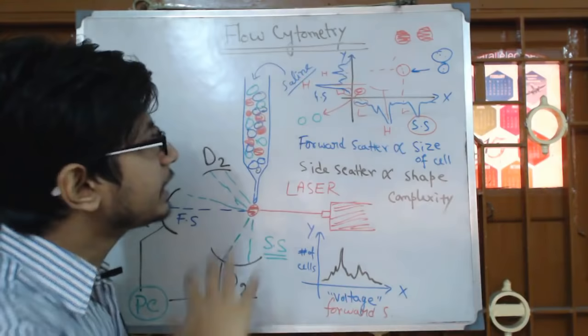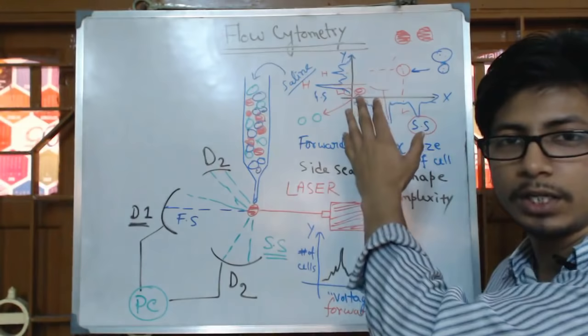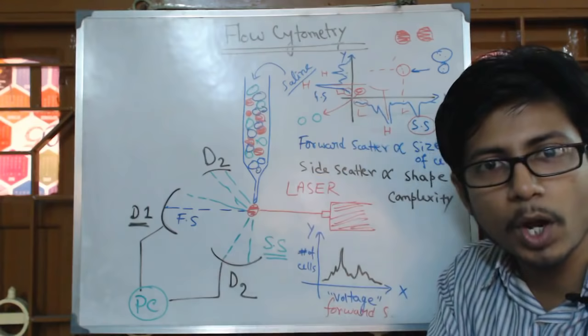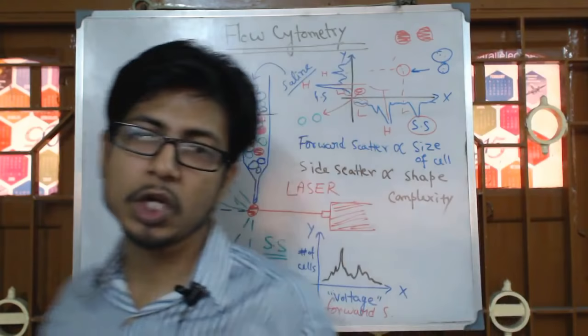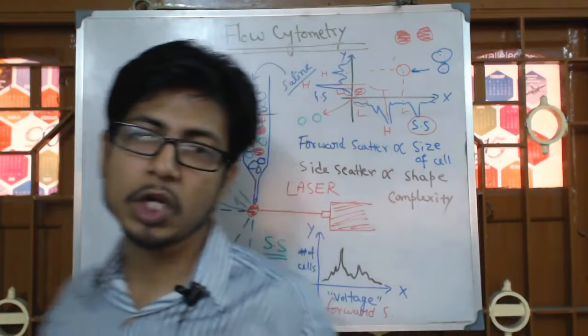Using this process of flow cytometry, we can determine and distinguish between all the cells and find where exactly they are placed in the plot. By knowing where they are placed, we can understand what kind of complexity those cells have.